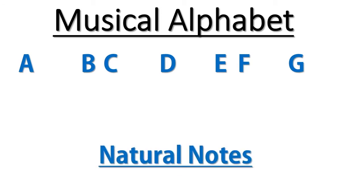These letters in blue I call natural notes. The reason I call them natural notes is that they don't have sharps or flats, which we're going to go through now. You'll also notice that I've added spaces between A and B, C and D, D and E, F and G — and between G and A there would also be a space. Between these natural notes there are other notes, which I call the in-betweeners.